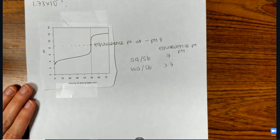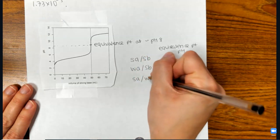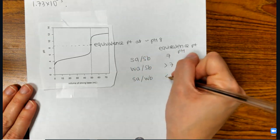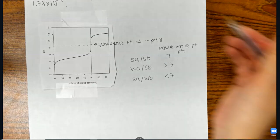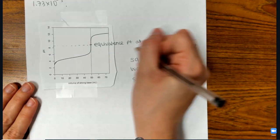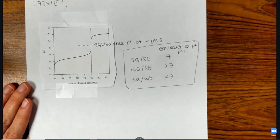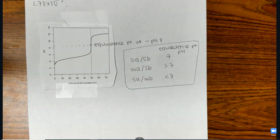It might be 8, it might be 9. If it is a strong acid-weak base titration, it's going to be less than 7. It might be 6, it could even be 5. And you should know this about these three types of titrations, what their pH is at the equivalence point.